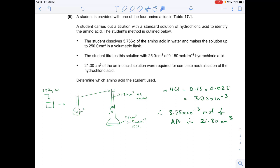So now we know that, what we can do is we can scale up to how many moles of the amino acid must have been in the volumetric flask, and therefore also in that 5.766 grams. So the way we do that is we need to divide the 3.75 times 10 to the minus 3 moles by the volume, 21.3, and then multiply that up to 250, and that gives us 0.044 moles.